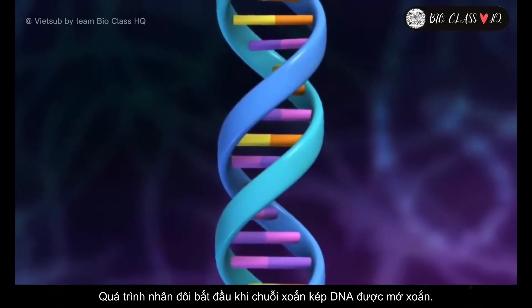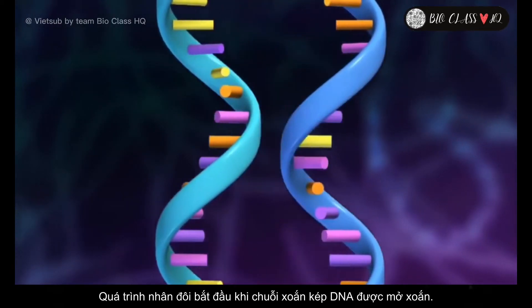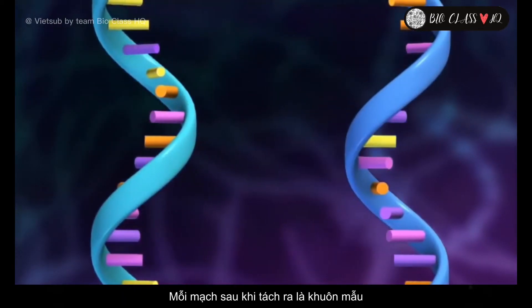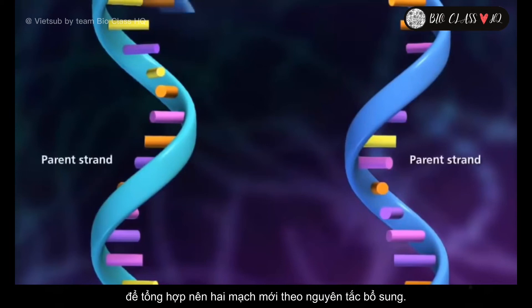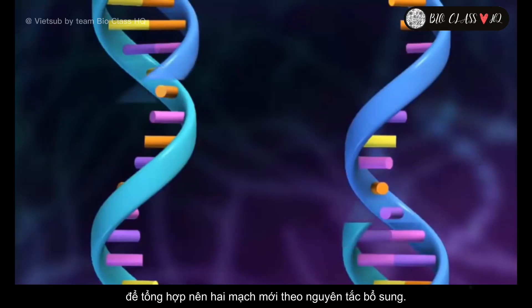Replication begins with double-stranded DNA being separated, and each original strand, called a parent strand, is used as a template for the complementary base pairing of nucleotides to make two new molecules.